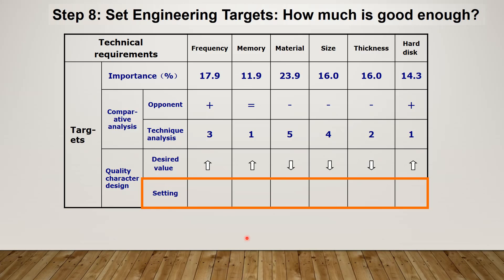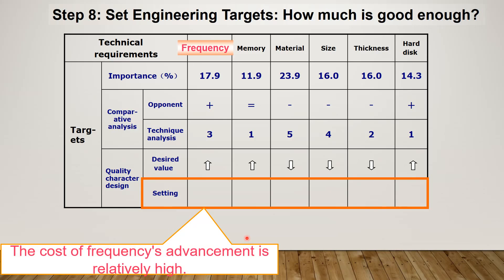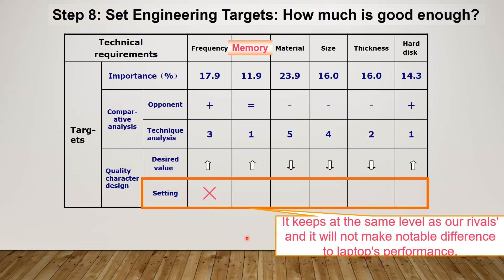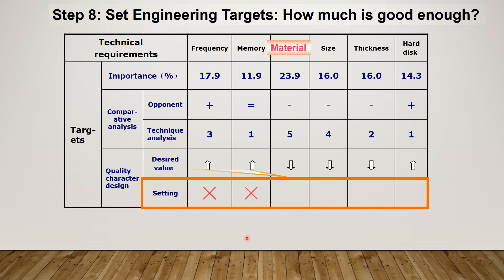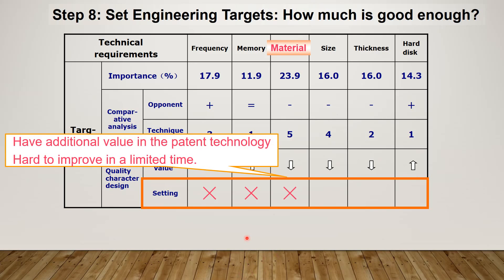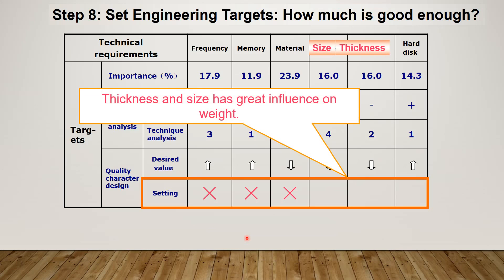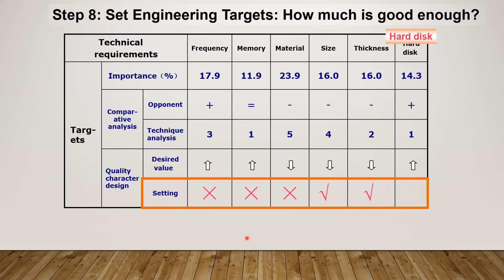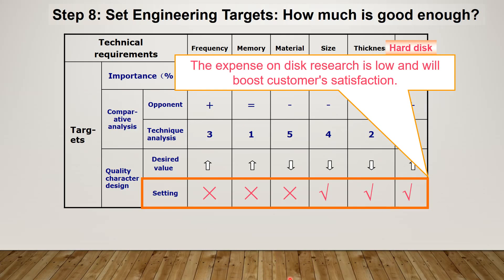For the last step, we set the engineering targets. For the frequency aspect, the cost to advance it is relatively high. For memory, since we are already on par with our rivals, further improvement will not generate more value in customer satisfaction. The material for the laptop costs more for better technology, so it is hard to improve in a limited time. On the other hand, size and thickness have a great influence on the weight of the laptop and their cost is relatively low. The expense on hard disk is also low. Therefore, we decided to improve these three technical aspects of the laptop to generate the most customer satisfaction per value.